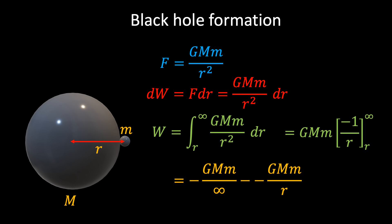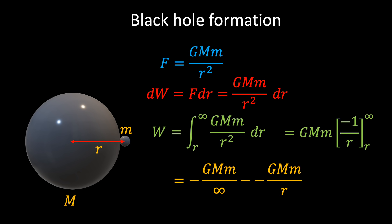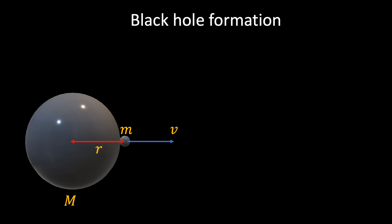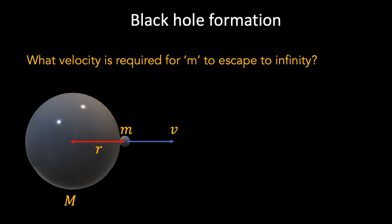If we integrate with respect to r and substitute in the limits of the integral, we find that the total work done is equal to G M m over r. As little m is moved away from big M, little m will gain potential energy, and the total gain in potential energy will simply be equal to the total work done. Armed with this, we can now ask: how fast would I have to throw little m such that it escaped the gravitational attraction of big M? This is equivalent to asking at what velocity little m would need to travel an infinite distance from big M.